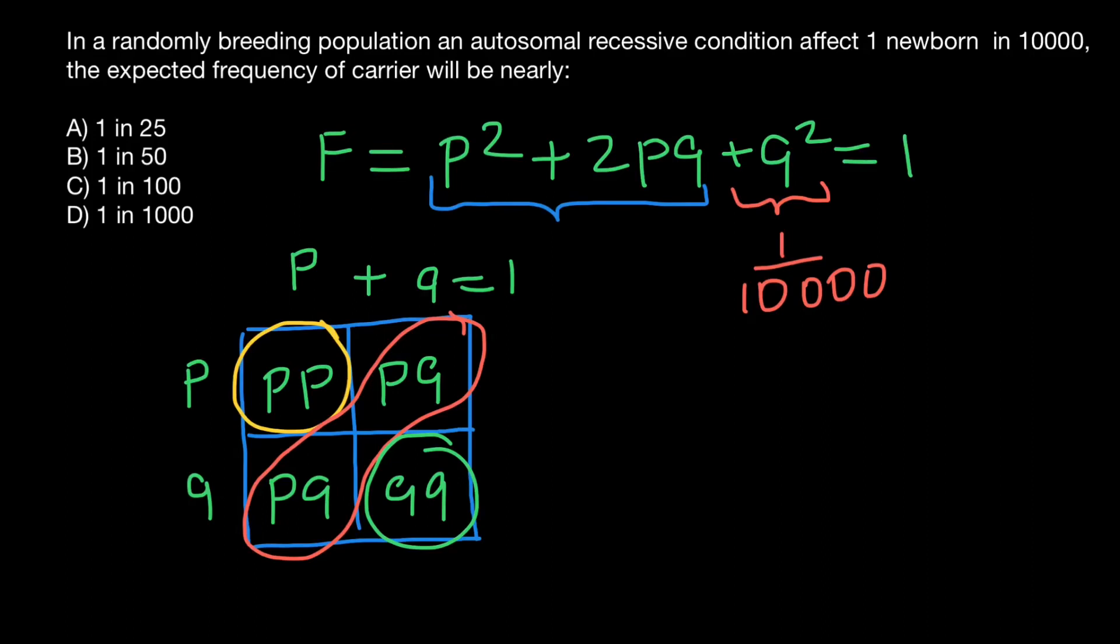So if we know Q squared, we can find the frequency of the allele Q, or recessive allele. We just have to take a square root of Q squared.